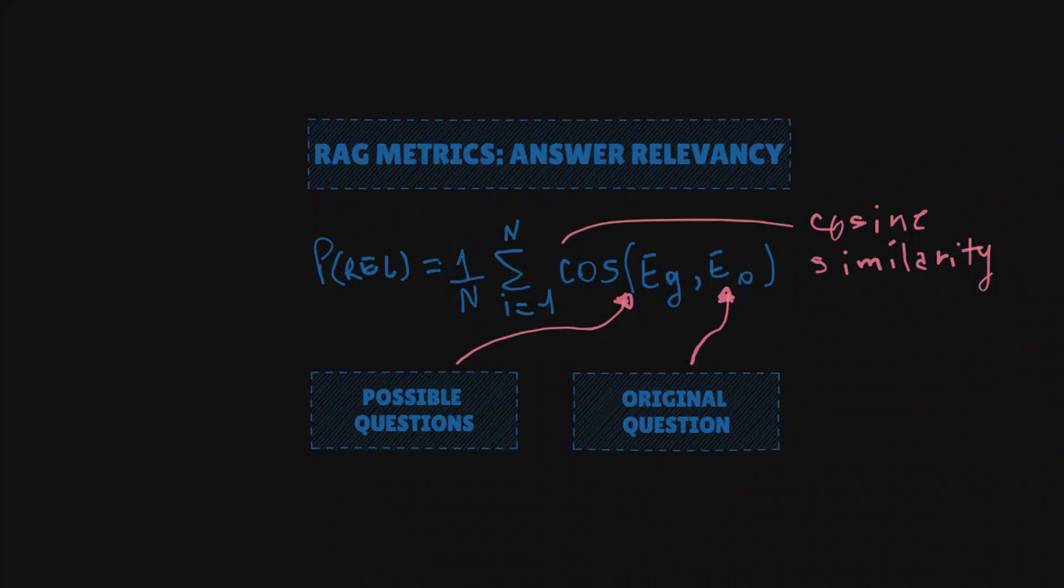Next up is the N, the one right here. And N is just the number of possible answers the system is looking at. So for every possible answer, we calculate its similarity to the original questions and then take the average of all these.